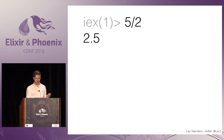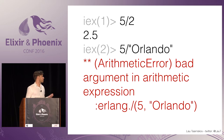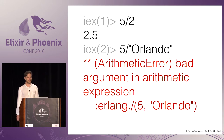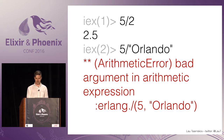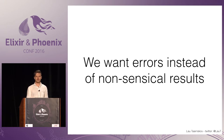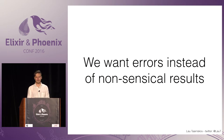But if you have five divided by Orlando, that doesn't make so much sense. In that case, we want errors. That's a good reason to have types — if something goes wrong, we want to know about it.